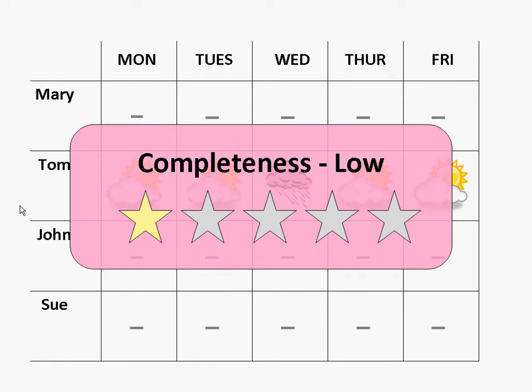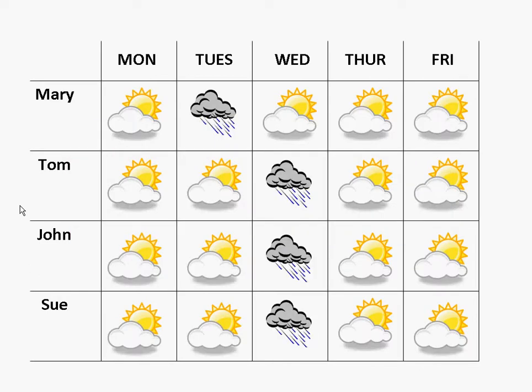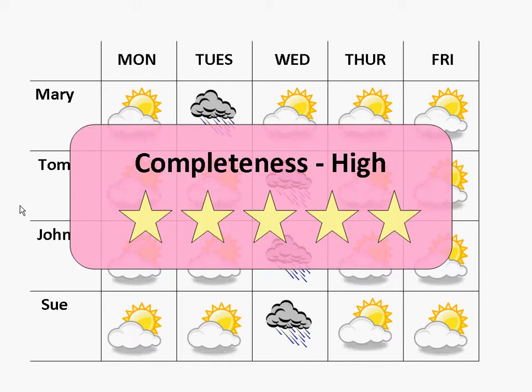We may want to wait for additional information and continue charting our data. In the meantime, we can estimate that it will next rain on Wednesday. For comparison, this example includes forecasts from all four meteorologists. Since we have estimates available from all of them, we would say that the completeness is high.